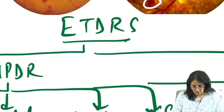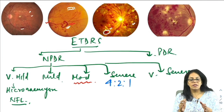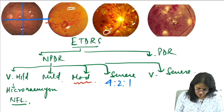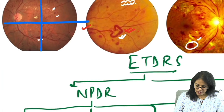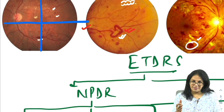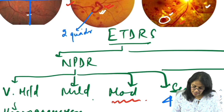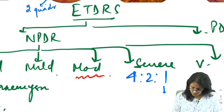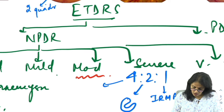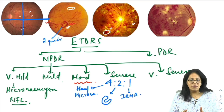Severe NPDR is defined by the 4:2:1 rule. Divide the retina into four quadrants: hemorrhages and microaneurysms in all four quadrants, OR looping and beading in two or more quadrants, OR IRMA in any one quadrant. Very severe NPDR is when more than one criterion of severe NPDR is present.